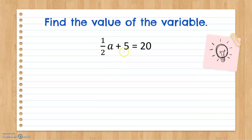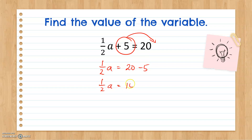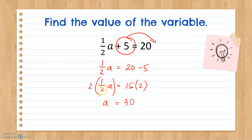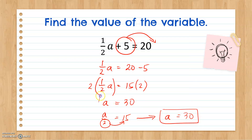Another example: 1 half A plus 5 equals 20. We transpose positive 5 to the right side, giving us 1 half A equals 20 minus 5, which is 15. To eliminate 1 half, we multiply both sides by its multiplicative inverse, which is 2. 2 times 1 half gives 2 over 2, or simply 1, leaving 1A on the left side, and 15 times 2 is equal to 30. You can also rewrite 1 half A as A over 2 equals 15, and multiply both sides by 2, leaving A alone and giving 2 times 15 equals 30. Either way, we arrive at the same answer: A equals 30.